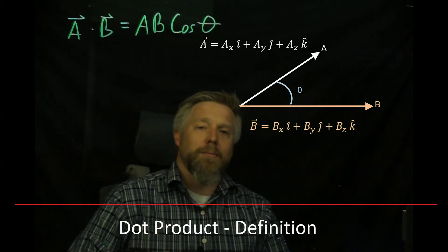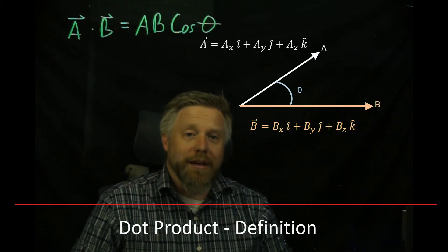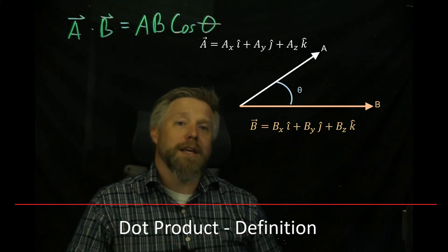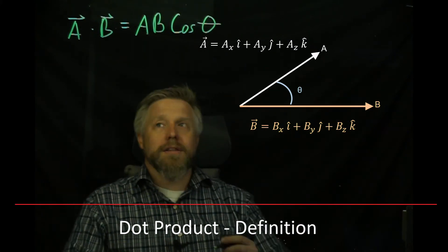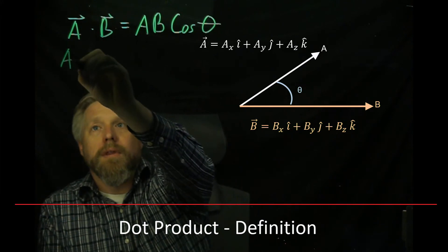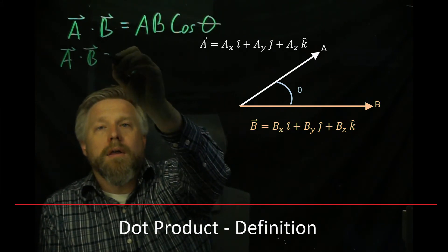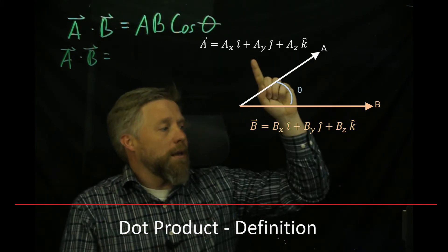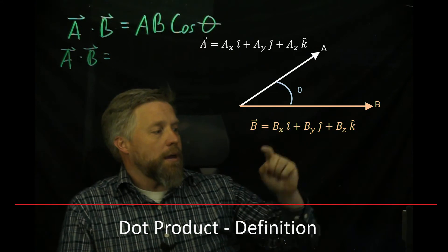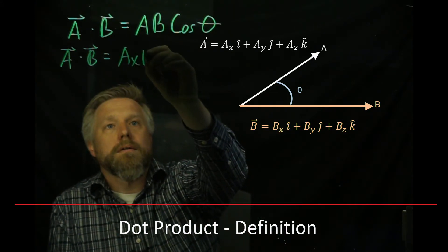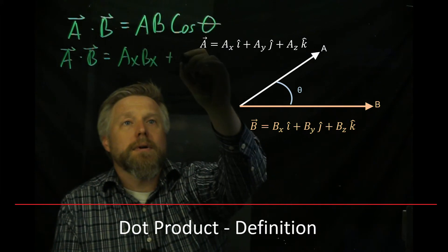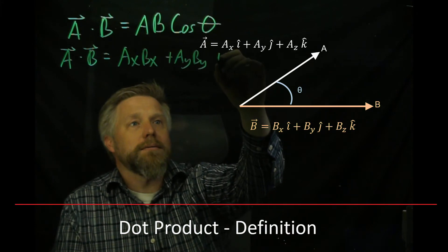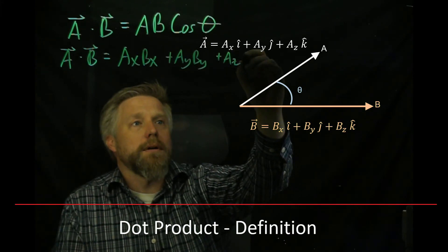We have the definition of the dot product, but this is not typically how you calculate it because often you don't have theta. The way you calculate it is actually much more simple: you take matching coefficients and multiply them together. For example, you take Ax times Bx, then add Ay times By, then add Az times Bz.